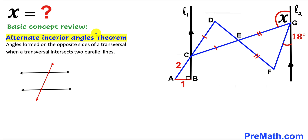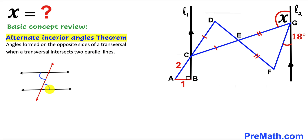Now let's recall the alternate interior angles theorem. The angles formed on opposite sides of a transversal when it intersects two parallel lines are called alternate interior angles, as shown in this diagram. These pairs of alternate interior angles are congruent.